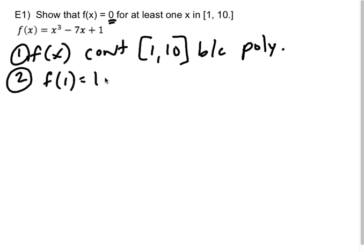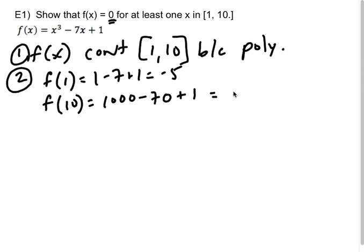The second thing I need to show is that this zero is between the two outputs. So I need to find f(1). Well, f(1) is going to be 1 minus 7 plus 1. So that's a negative 5. And I need to find f(10), which is going to be a really big number. So that's going to be 931.